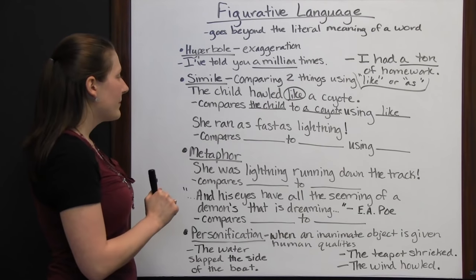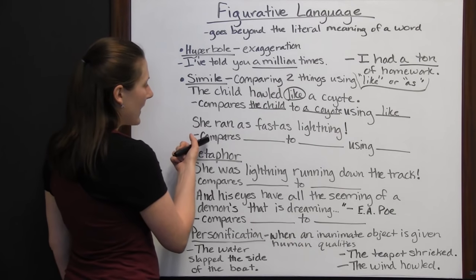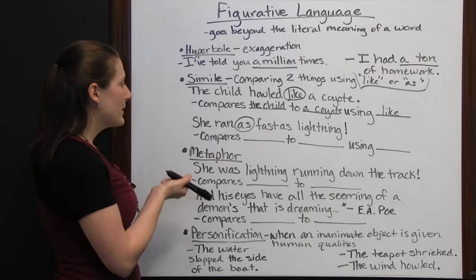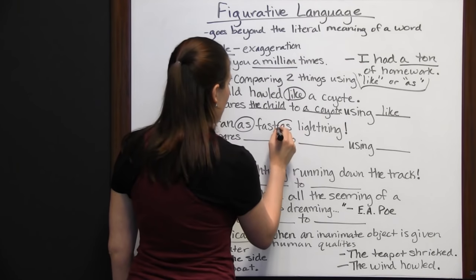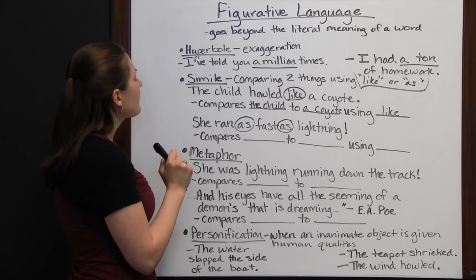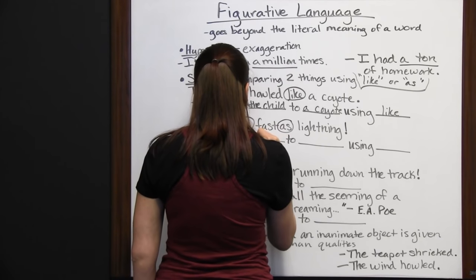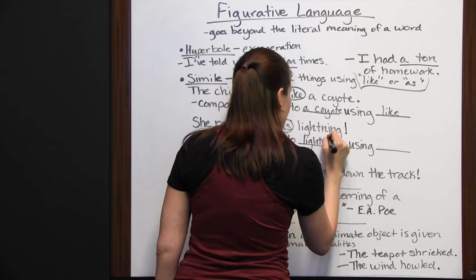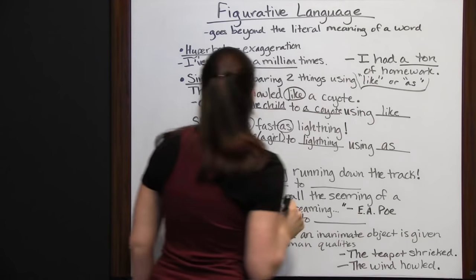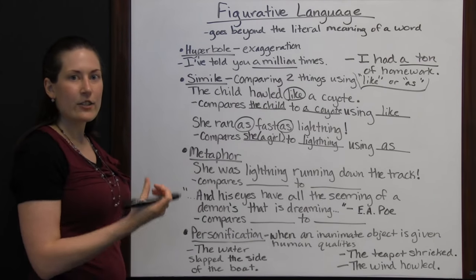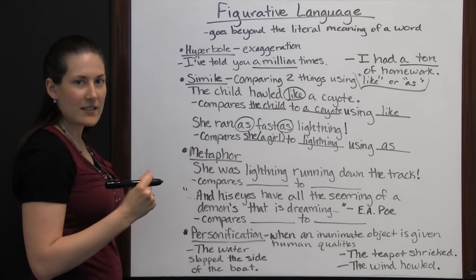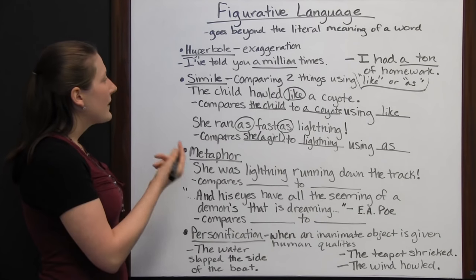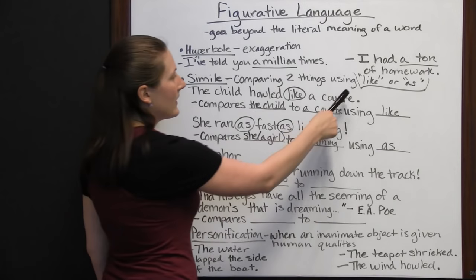Another simile example: 'She ran as fast as lightning.' We see the word 'as,' and this sentence compares a girl to lightning — saying she's that fast, so fast you barely saw her before she got past you or reached the finish line. So a simile compares two things using 'like' or 'as,' and those are the important words to look for to identify a simile.